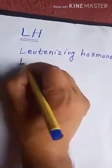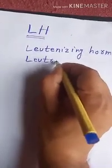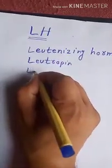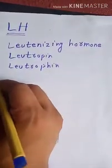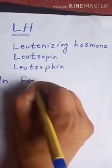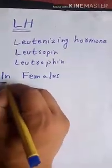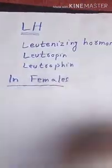The adenohypophysis produces a hormone called luteinizing hormone, also known as lutropin. In this video, we will discuss in detail the function of LH in females.